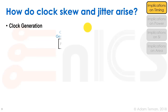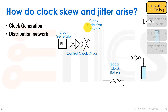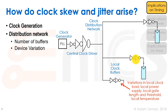Clock skew and jitter arise from several sources. First, from clock generation such as a PLL. Second, from the distribution network — the PLL drives a central clock driver into a distribution network of buffers. Skew arises because the number of buffers to each endpoint may differ, and even with equal buffer counts, manufacturing variation between buffers causes different speeds. Wire length variation produces different RC delays to each point.